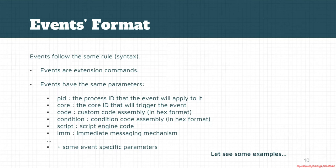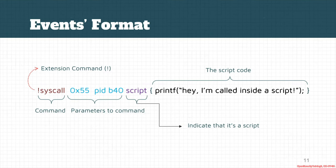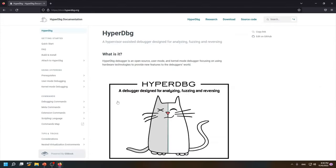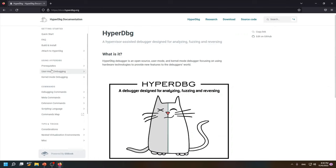Let's see some examples. As you can see in this example, which is a syscall command, it starts with an exclamation mark, showing it's an extension command. After that, we can see the command itself — it's syscall. Each event might have a specific parameter related to that event. Here's the documentation of the HyperDbg debugger. You can go through the different extension commands, debugging commands, metacommands, and most importantly, extension commands.